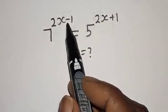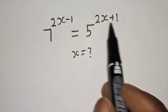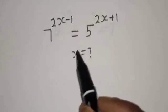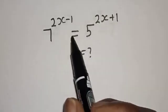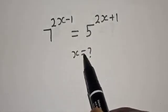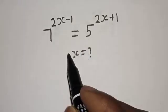7 raised to power 2s minus 1 is equal to 5 raised to power 2s plus 1. What is the value of s? Welcome to my class. In this class, we want to find the value of s from this given equation.